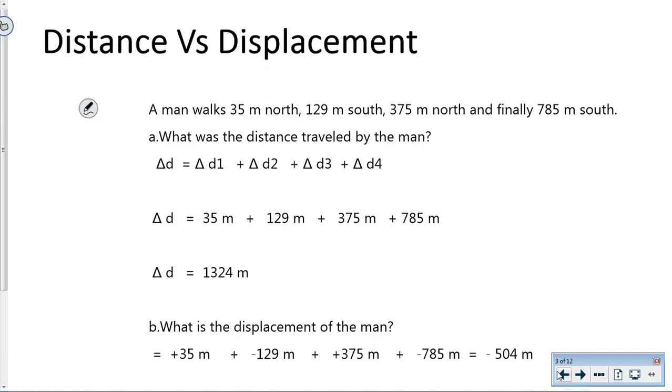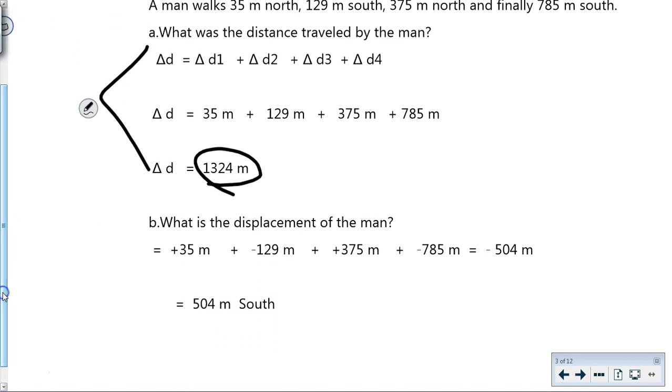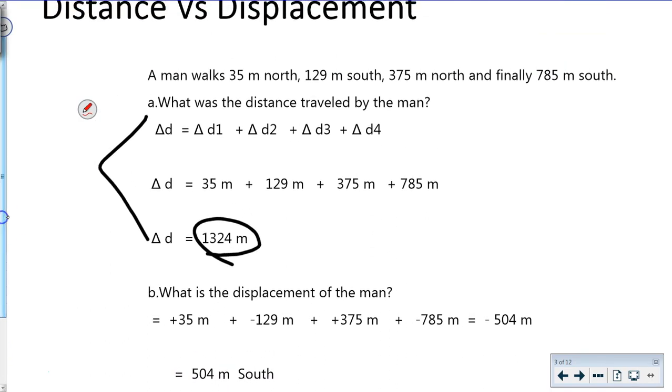The next thing we're quickly reviewing is distance versus displacement. You should be very familiar with these calculations. With distance, direction doesn't matter—we simply add all the numbers together to get an answer of 1324 meters.